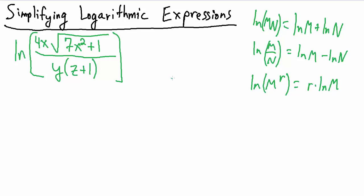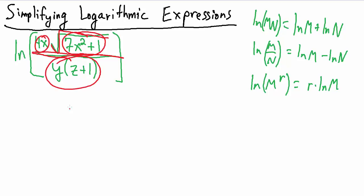Even though this example is a bit more complicated than the previous video, I want to go through it more quickly to show a streamlined thought process. Start by looking at what's the biggest thing happening — is there anything affecting everything? Looking inside the natural log, the biggest thing happening is the division, because the division is affecting everything. There is a square root, but it's only on part of the numerator. So the biggest thing affecting everything is the division, and that's what we handle first.